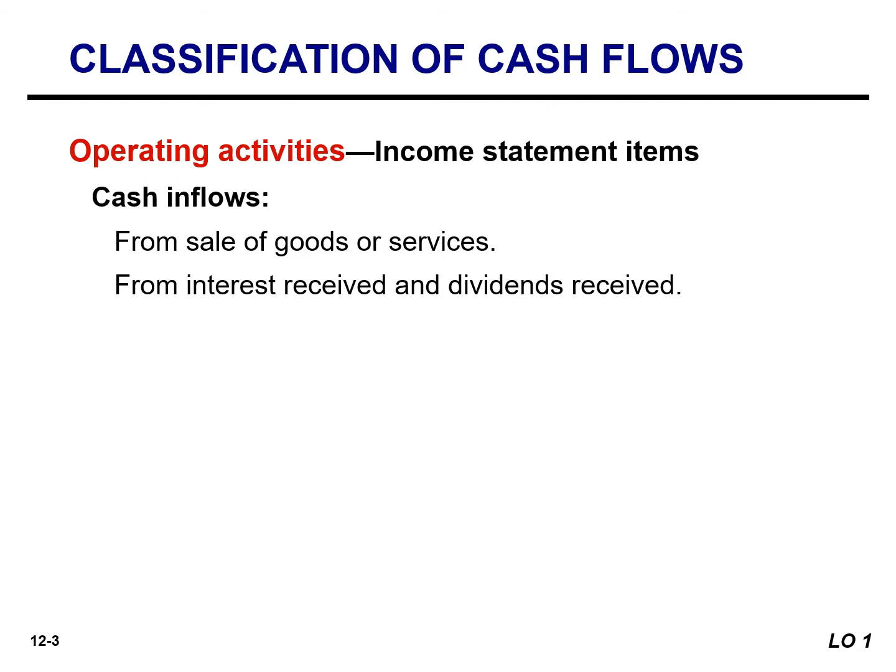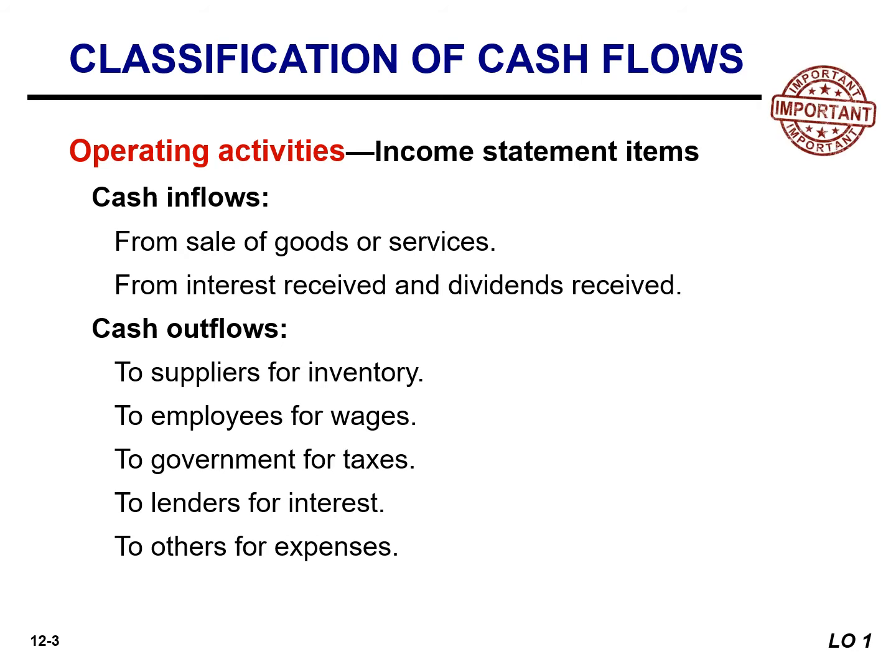The operating activities section focuses on the company's ability to generate cash through operations. Typical inflows are from the sale of goods or services, and typical outflows are to suppliers and employers. Many believe this section is the most important because it's the best measure of a company's ability to continue — in essence, does the company generate sufficient cash? We look at this section to determine if the company has enough cash to run its day-to-day operations.